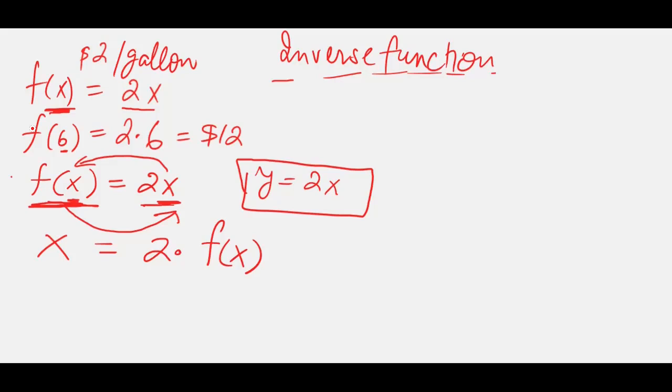So 2 is multiplied with f of x. So let's divide by 2 both sides. So 2 and 2 gets cancelled. And I'm just flipping, I'm writing function of x to the left hand side and x over 2 to the right hand side. This is an inverse function.